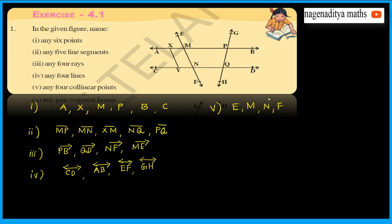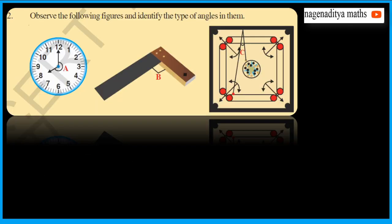Any four collinear points — points that lie on the same line. The fifth question: E, M, N, F — all these points are collinear points.